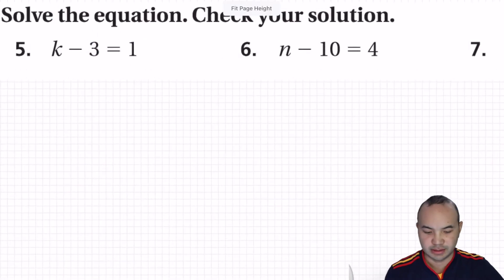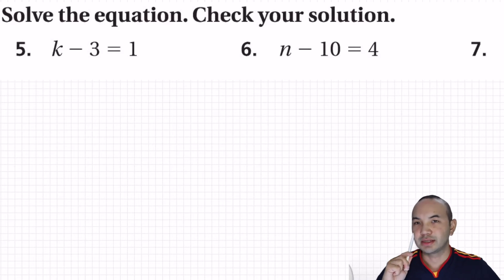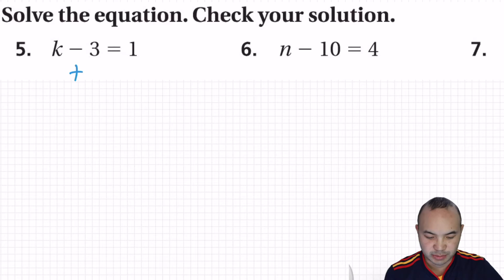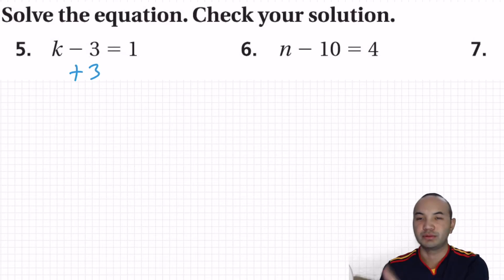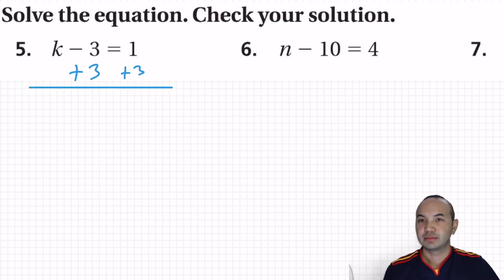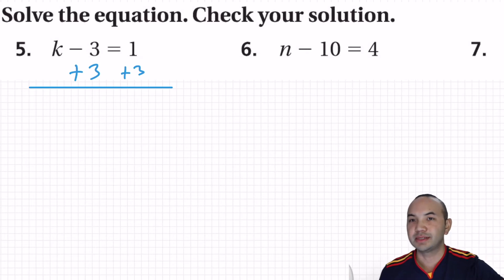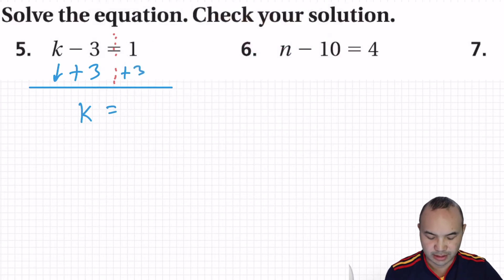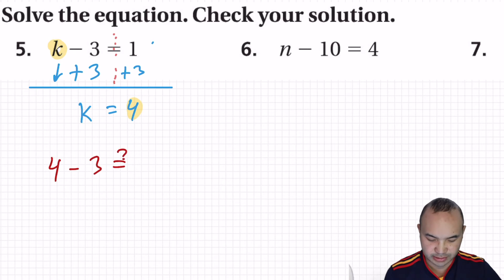So this is k minus 3 equals 1. I want to isolate k on the left side. The operation is minus 3, so the opposite is plus 3. I'm going to add 3 to both sides. Minus 3 plus 3 is 0, so all that's left is k. And 1 plus 3 is 4. So k equals 4. To check: 4 minus 3 equals 1. 1 equals 1 — correct.